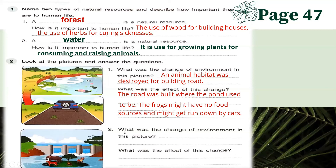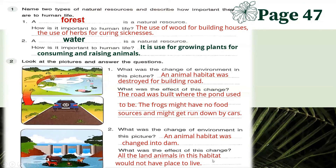For number two, we are looking at this picture. Here you can see a dam and animals. The change is that an animal habitat was transformed into a dam. The effect of this change is that all the land animals in this habitat would have no place to live because the area has been changed into a dam, and the animals will die.